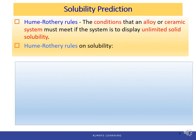Back in chapter 4, when we learned about point defects and introduced impurity atoms and how to form solid solutions, we mentioned the Hume-Rothery rules, which describe the conditions that an alloy or ceramic system must meet to display unlimited solid solubility — meaning no matter how much solute we add, all of it will dissolve into the solvent.